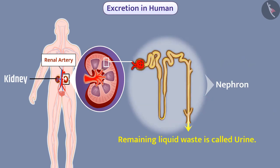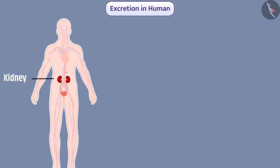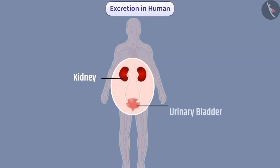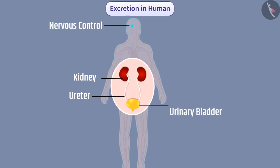Since the filtration work in the kidney is performed by the nephron, it is called the basic filtration unit. Each kidney is connected to the bladder by a long tube called the ureter, which carries urine from the kidney to the bladder. The bladder is a muscular organ in which urine is stored. The urinary bladder is under nervous control, so the release of urine is under human control. When the bladder expands, urine is carried out of the body through the urethra.